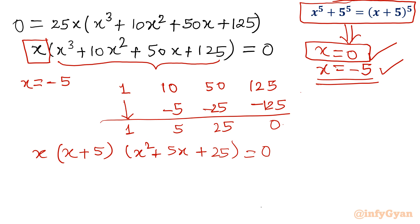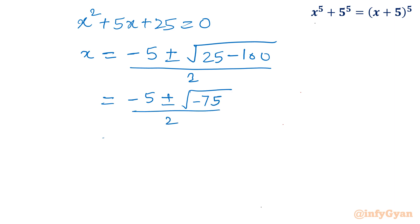Now we have to solve the quadratic equation. x=0 is a solution. x=-5 is a solution. Two roots are coming from x^2+5x+25=0. Using the quadratic formula: x = (-b ± √(b²-4ac))/2a = (-5 ± √(-75))/2. That's -5 ± 5√3i over 2.